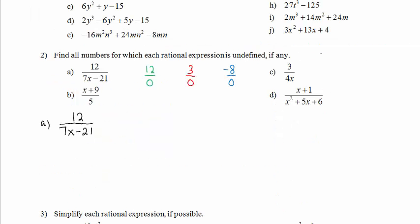We must find all numbers which make each rational expression undefined. We will do a little bit extra here and also write the domain of the expression. A rational expression is a fraction made up of a polynomial in the numerator and a polynomial in the denominator. So a rational expression is a polynomial divided by a polynomial.